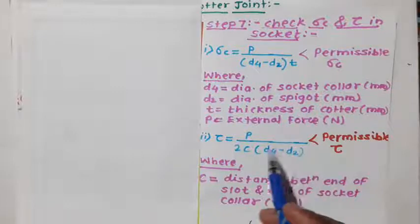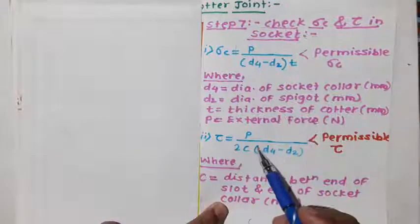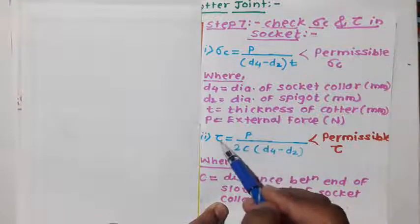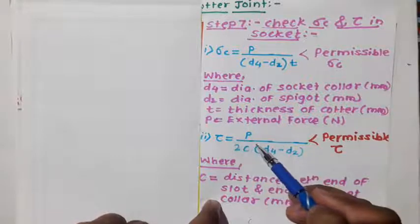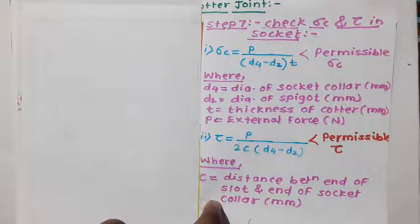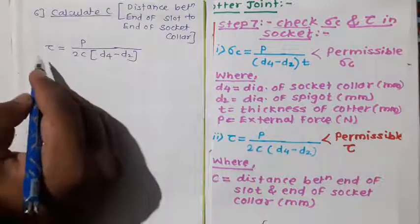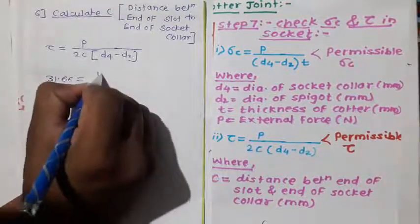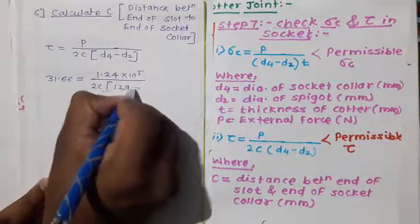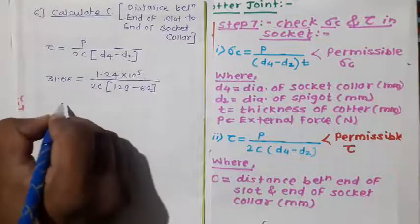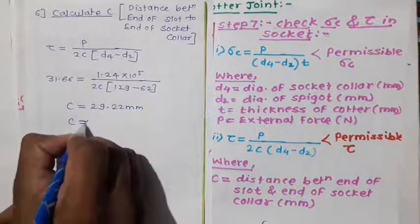The last part is to find C, the distance from the slot to the end of the socket collar, using the second equation from step number 7, which normally checks shear stress for the socket. Substituting permissible shear stress τ = 31.66, P = 1.24 × 10⁵, D4 = 129mm, and D2 = 62mm, we calculate C = 29.22mm. Rounding up, C = 31mm. This is the final answer for this numerical.